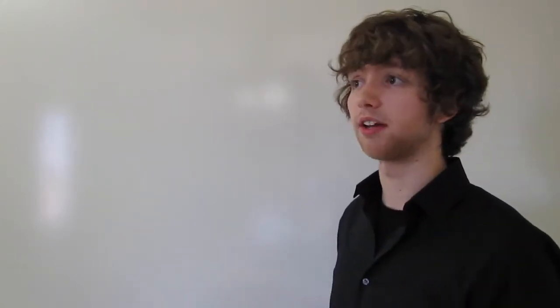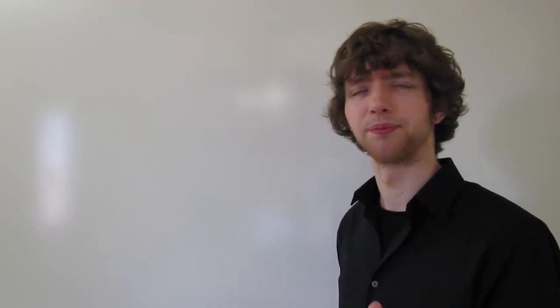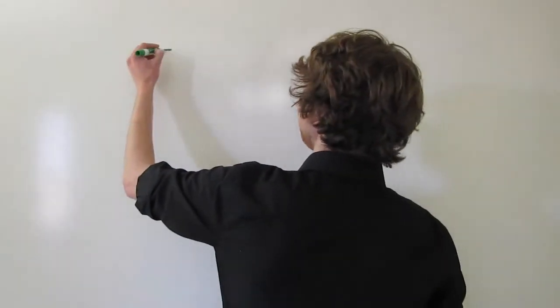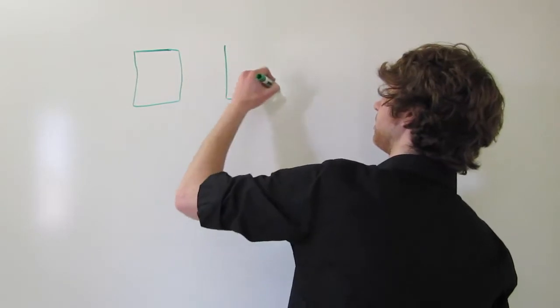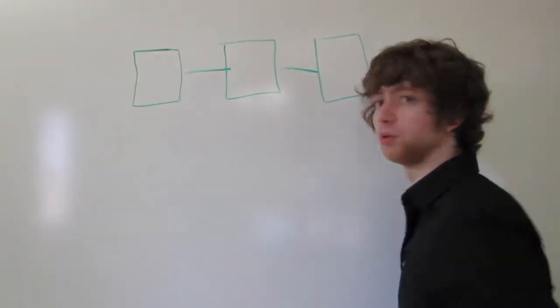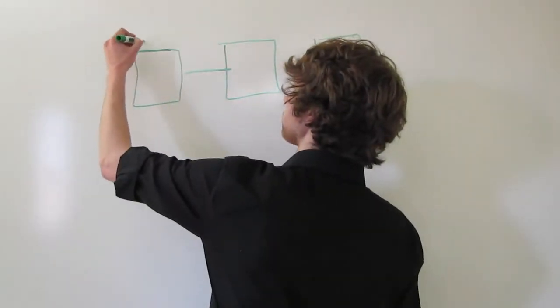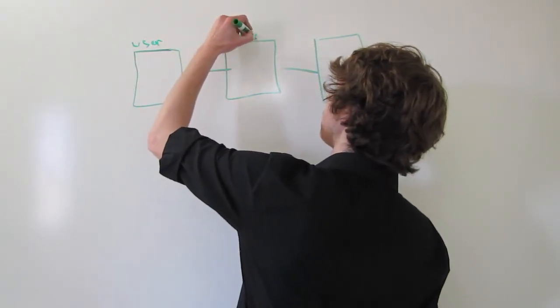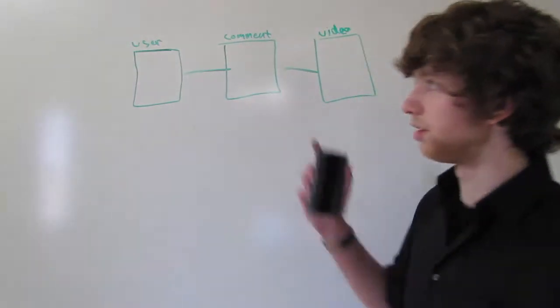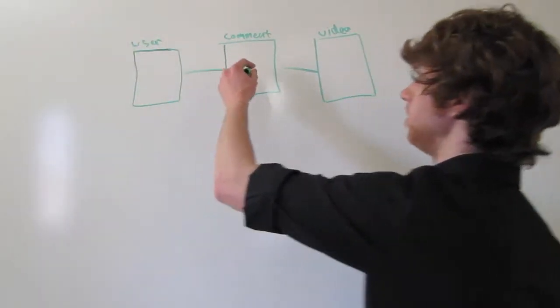We're going to have a user table — not a customer table, user table — and then we're going to have a comment table and a video table. Think of like a video sharing website. We have a table here, a table here, and a table right there. These are all connected. I'm just going to write the name of the table. So we've got the user, the comment, and the video. The only way the user has any connection with the video is through the comment table, because a user posts a comment on a video.